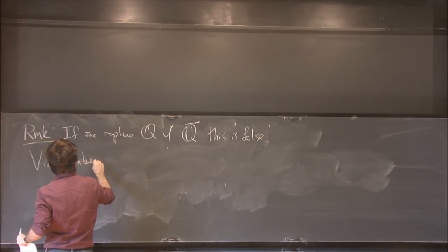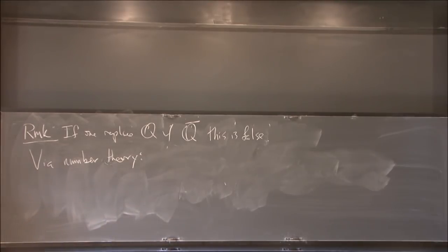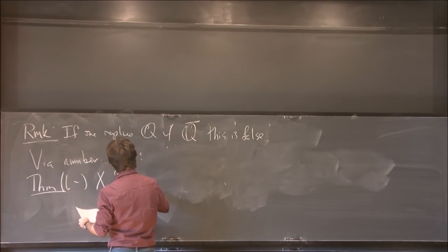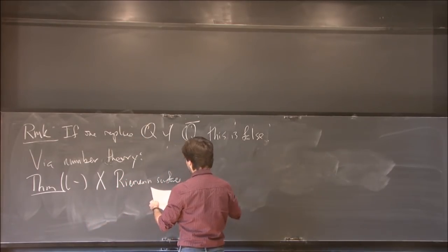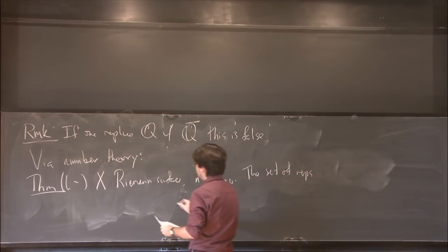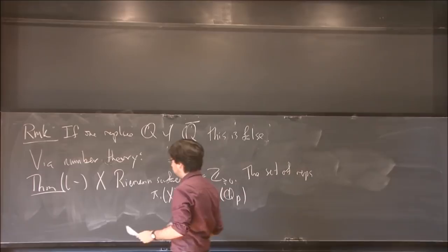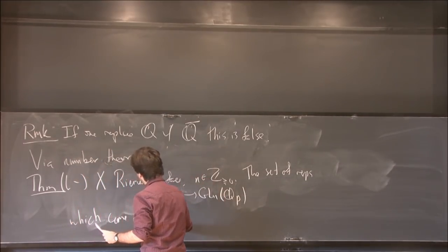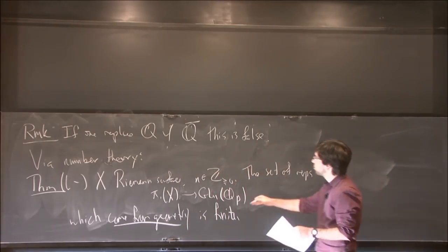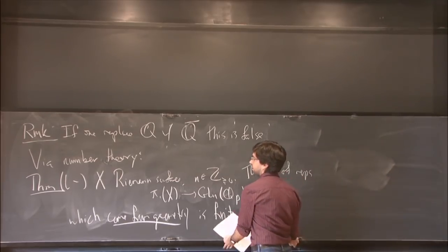What I've been thinking about is sort of variance of this theorem that come from number theory. The first thing I'll mention is just a very slight strengthening of this theorem. So again, x is a Riemann surface, and n is a non-negative integer. Then the set of representations from pi_1 of x into GL_n(Q_p), which come from geometry, is finite. This is a little stronger because Q_p contains number fields of arbitrary degree.